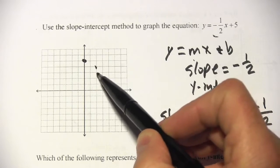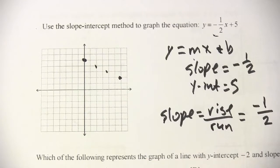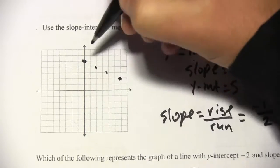So I could go down 1 and over 2, and down 1 and over 2, and down 1 and over 2. And there is my line, and I can sketch that in here.